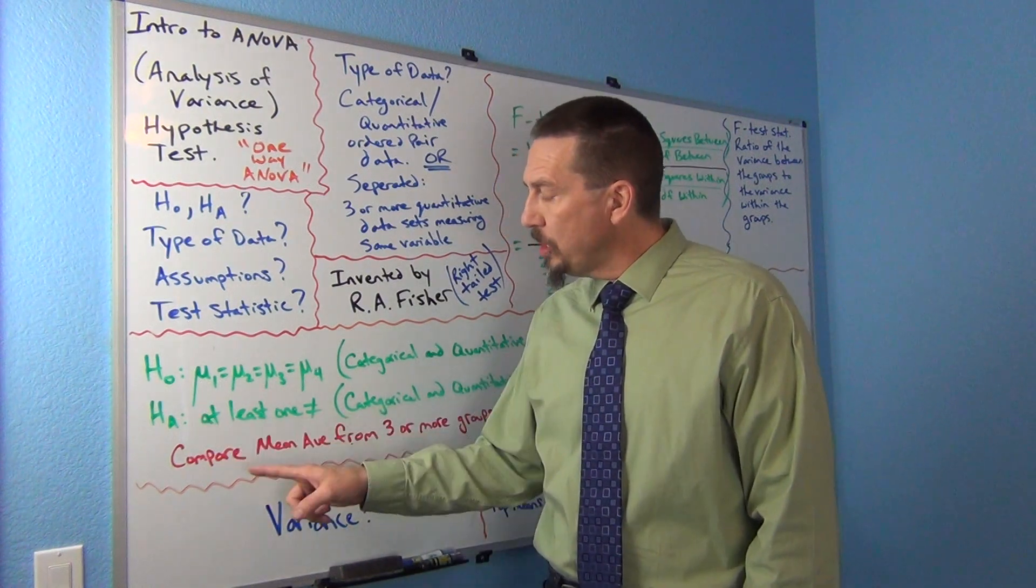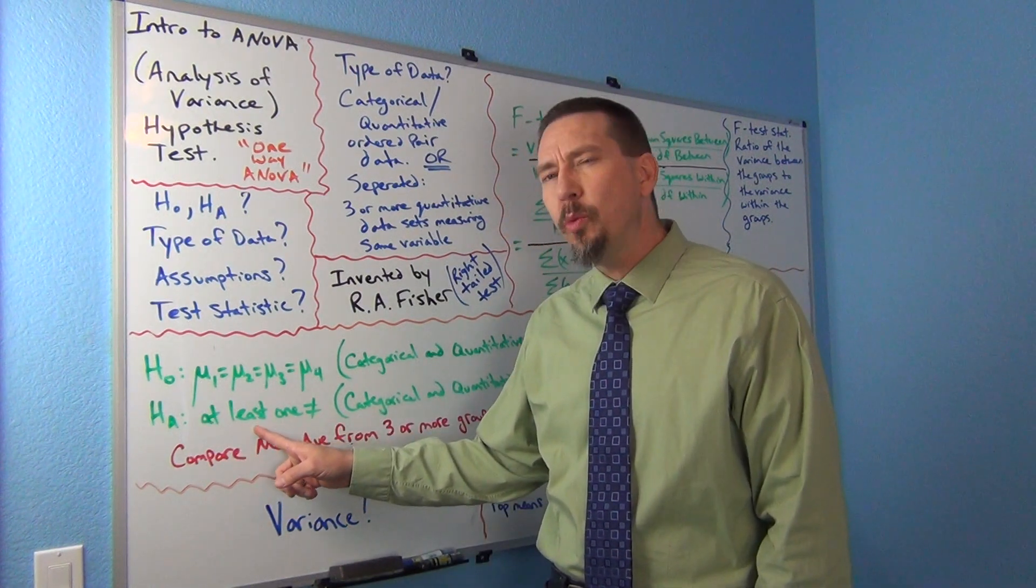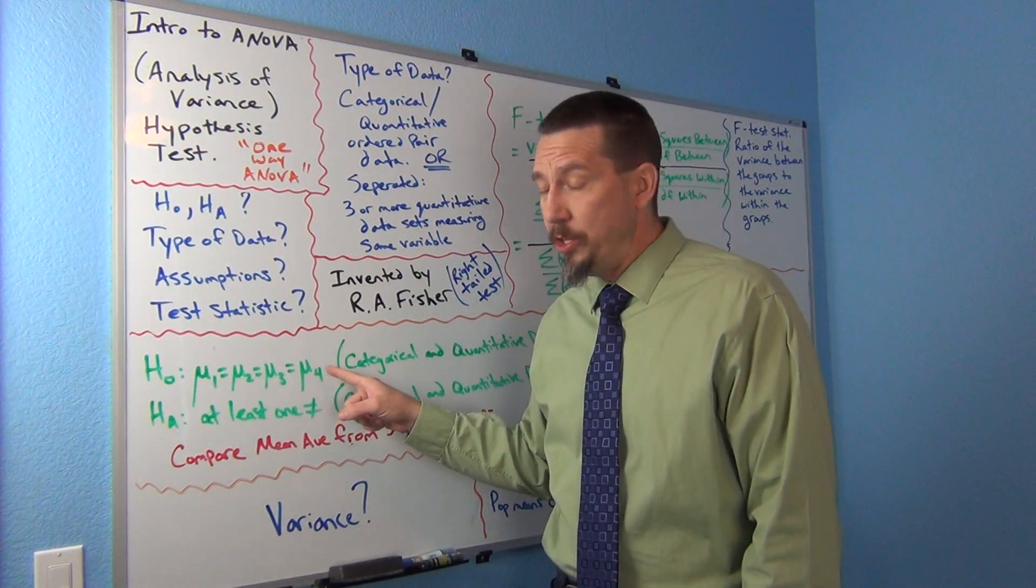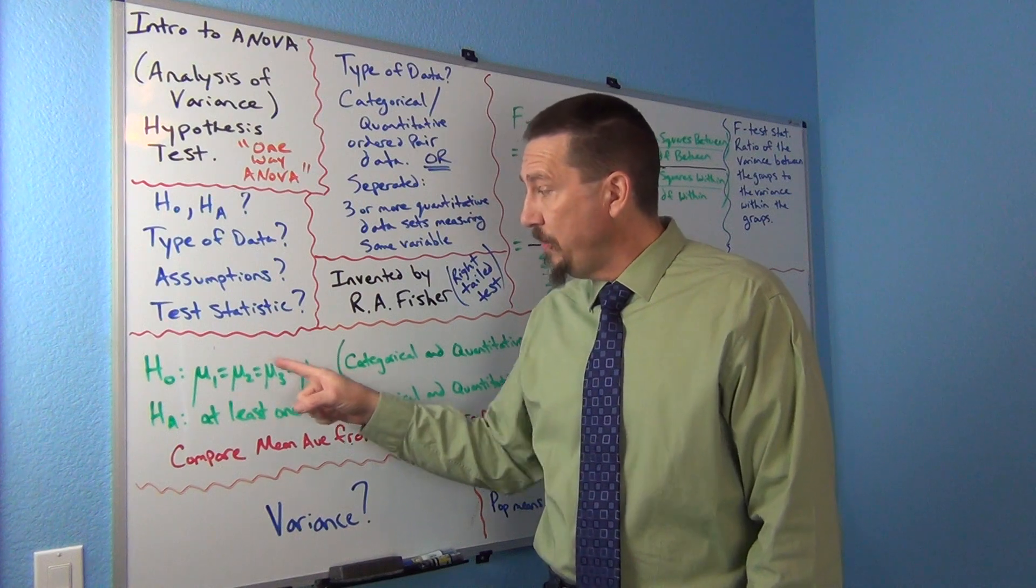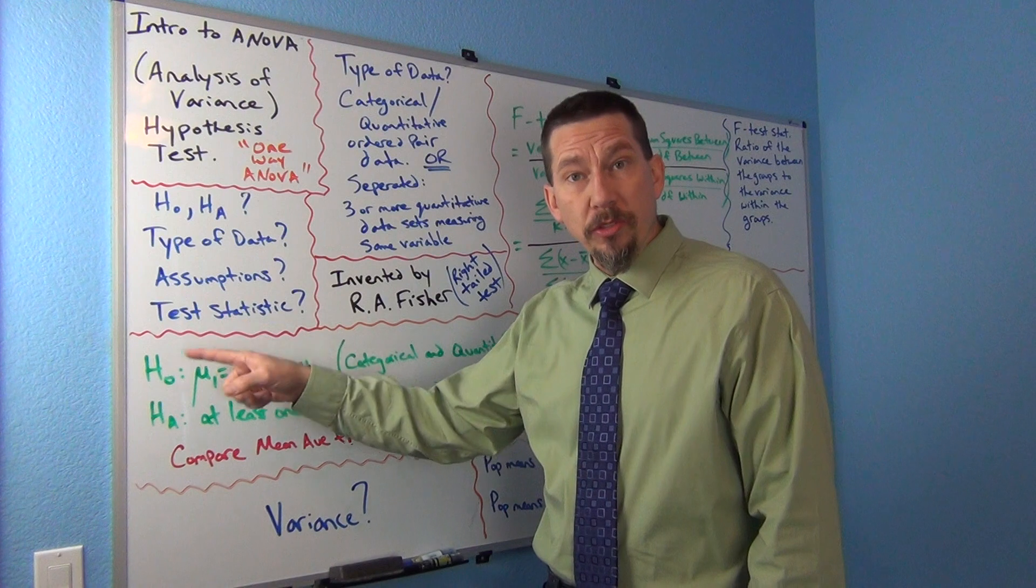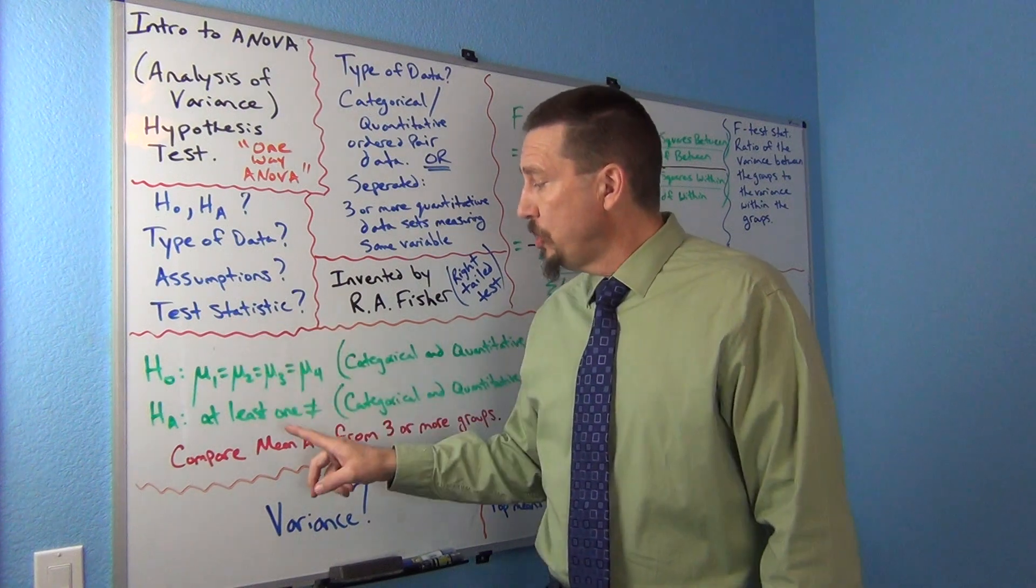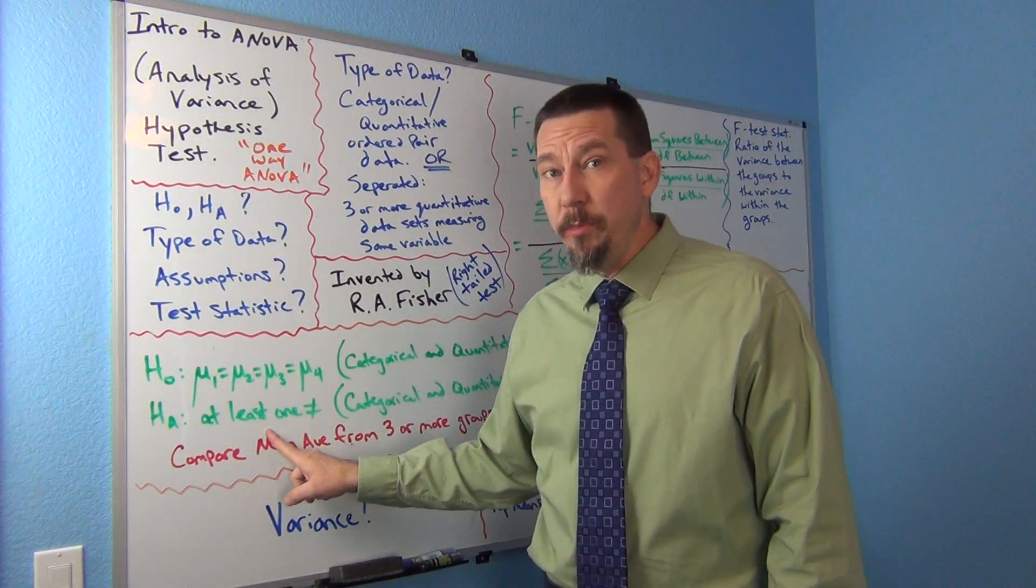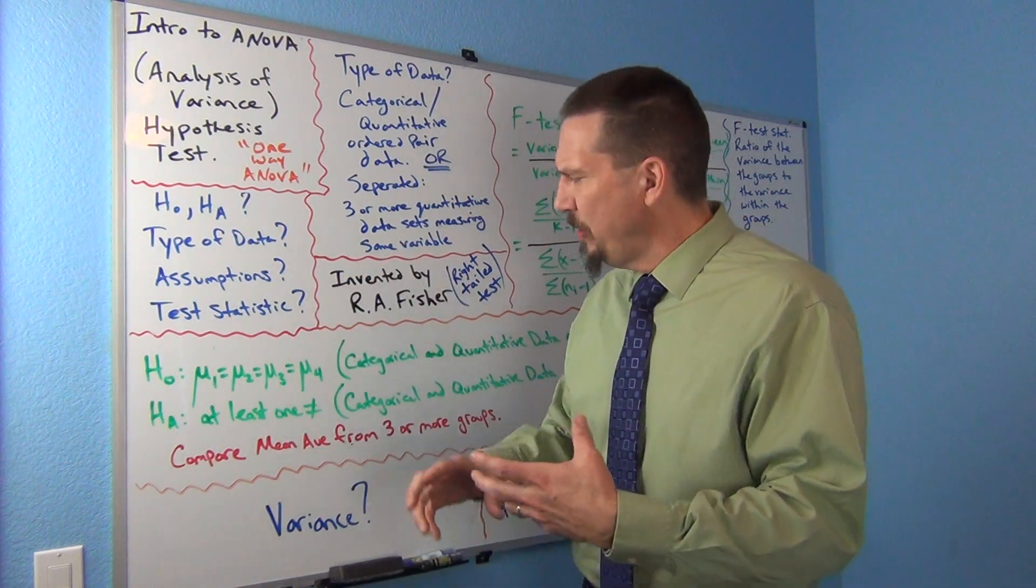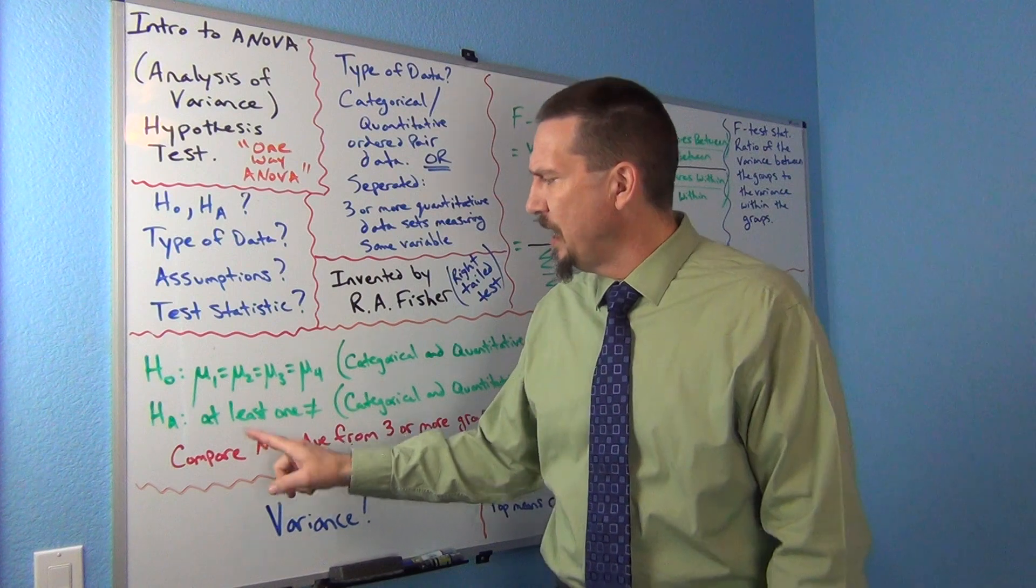So the Null hypothesis looks kind of like the two population mean test, except it can have more than just two. So instead of mu1 equals mu2, you got mu1 equals mu2 equals mu3 equals mu4 equals mu5 equals mu6. As many population means as you want to compare. And then the alternative is usually at least one is not equal. Notice I didn't say all of these have to be not equal for the null to be false. If even one of these was not equal, then the null would be false. So you don't want to say that all the mu's are not equal. So usually we say at least one is not equal.